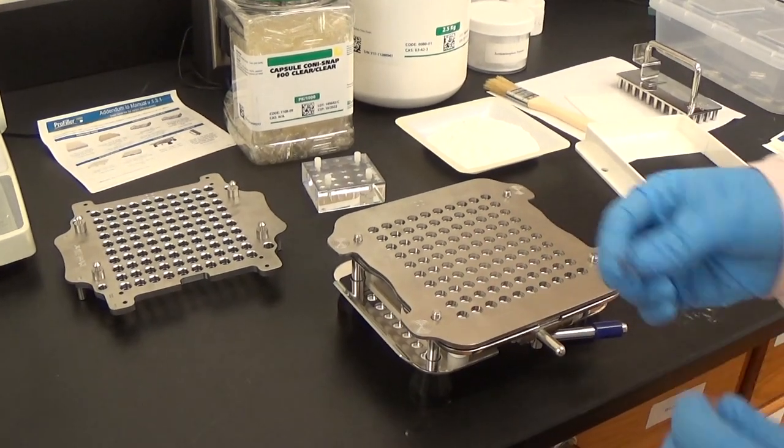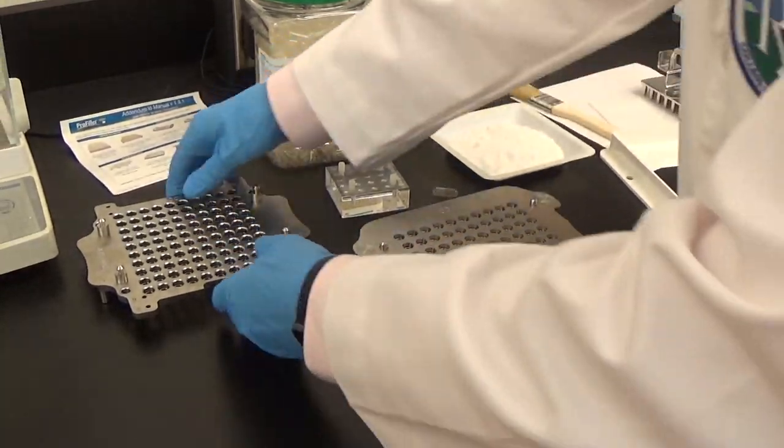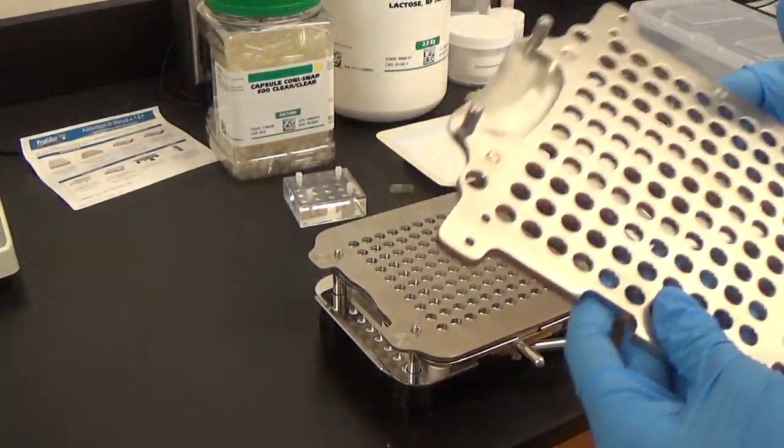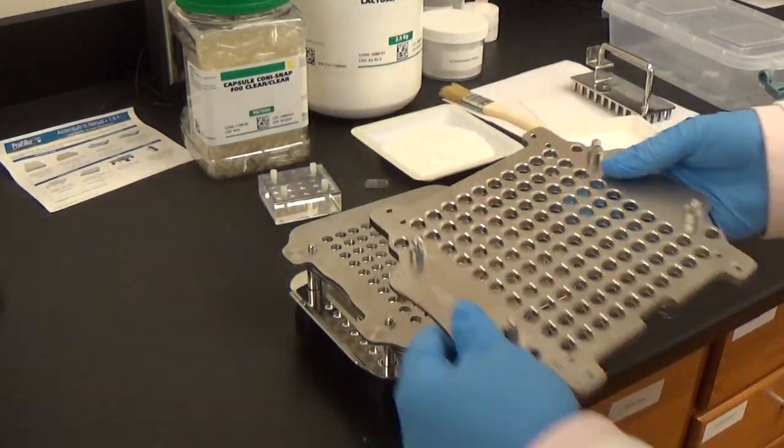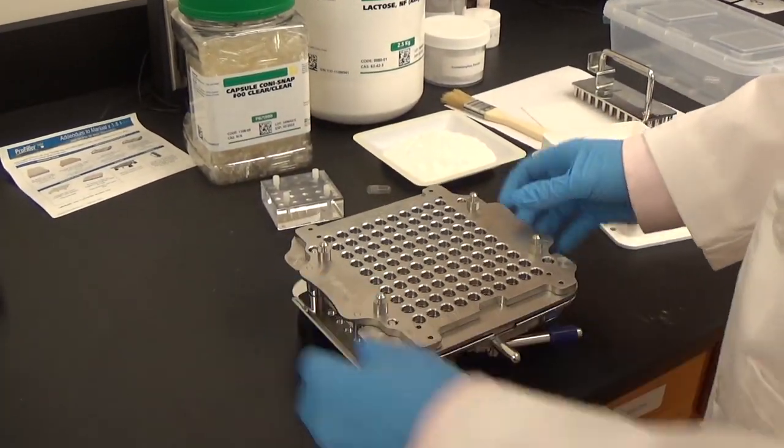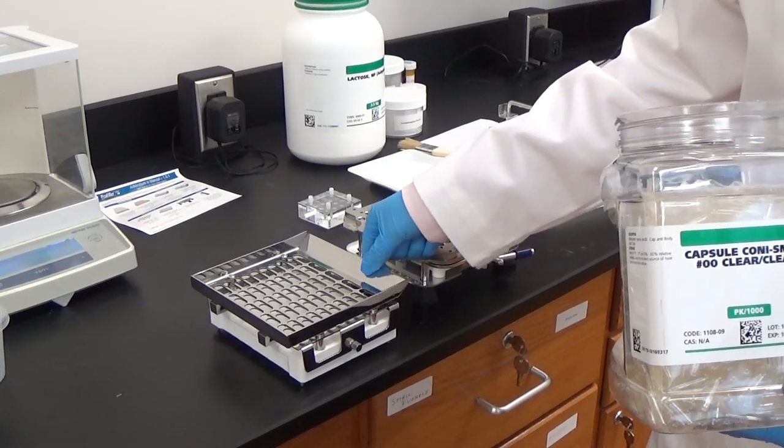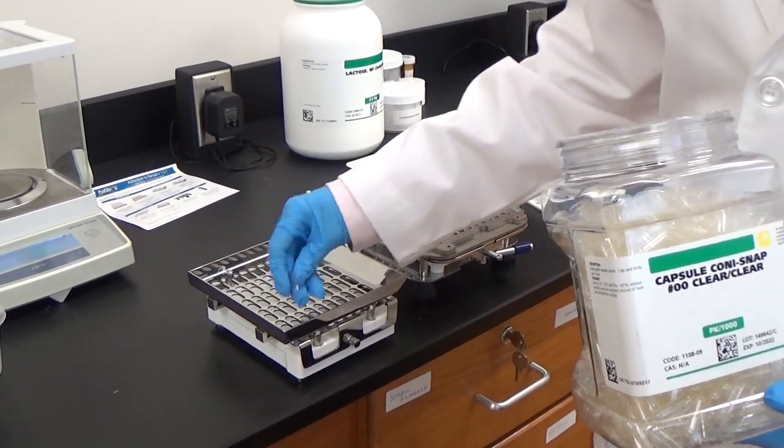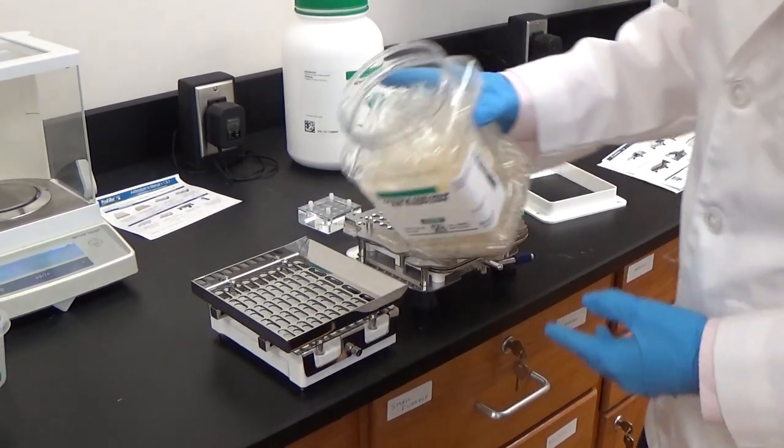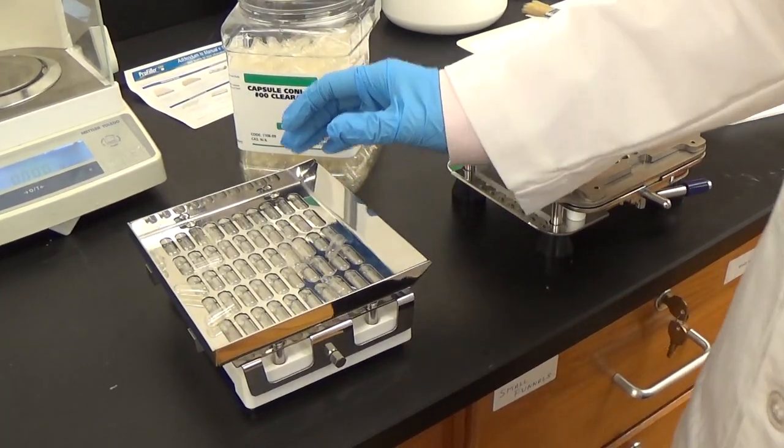This part will then store the body of the capsule and then this other machine will store the double zero sized capsules which will be the tops. So this next machine is a capsule fill loader and orienter. This will provide the capsules to be loaded in a specific orientation. This will fill 50 capsules.